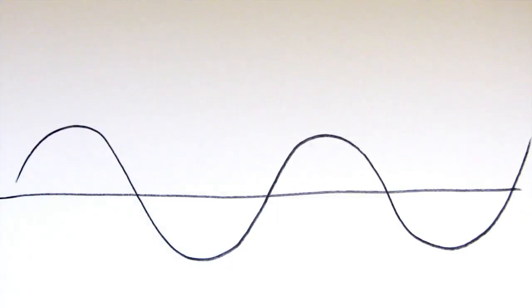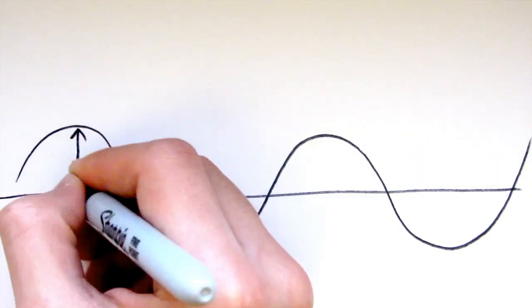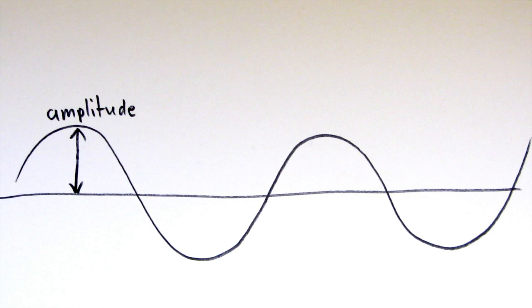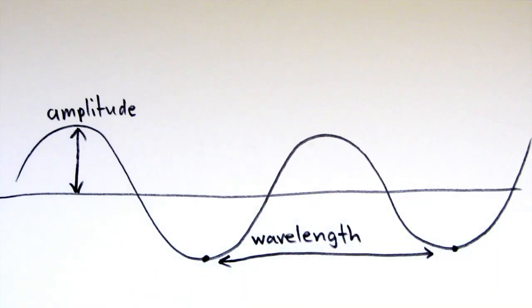Waves have an amplitude, a wavelength and a frequency. The amplitude of a wave is its maximum disturbance from its undisturbed position, which basically means the distance between the middle and its highest point.